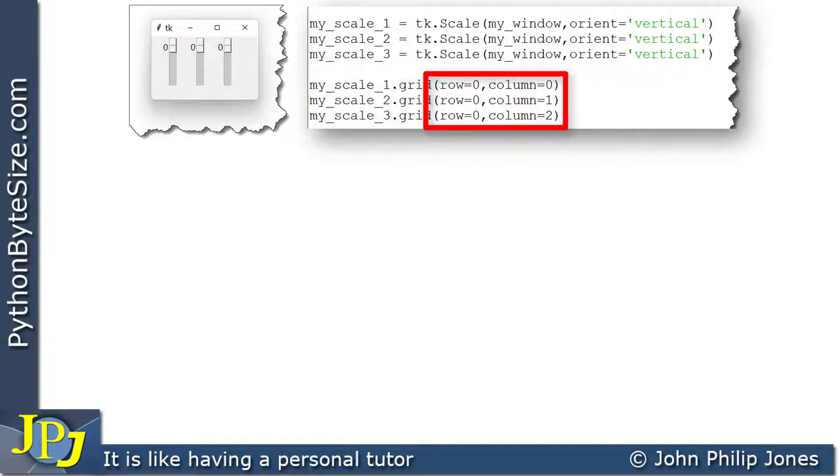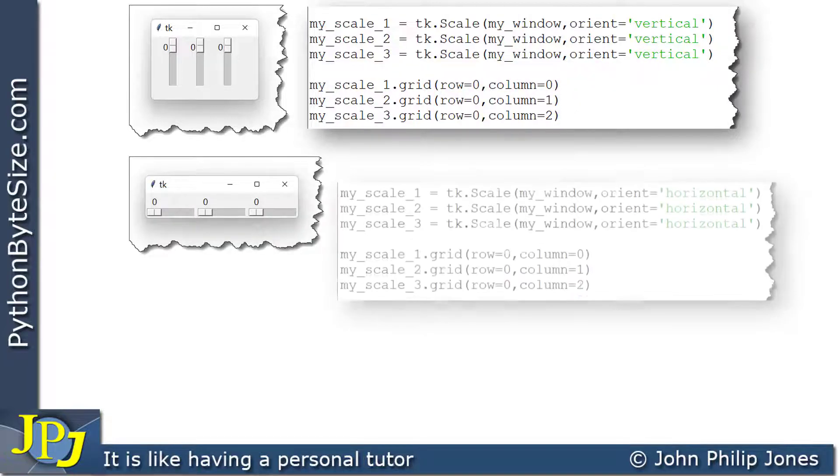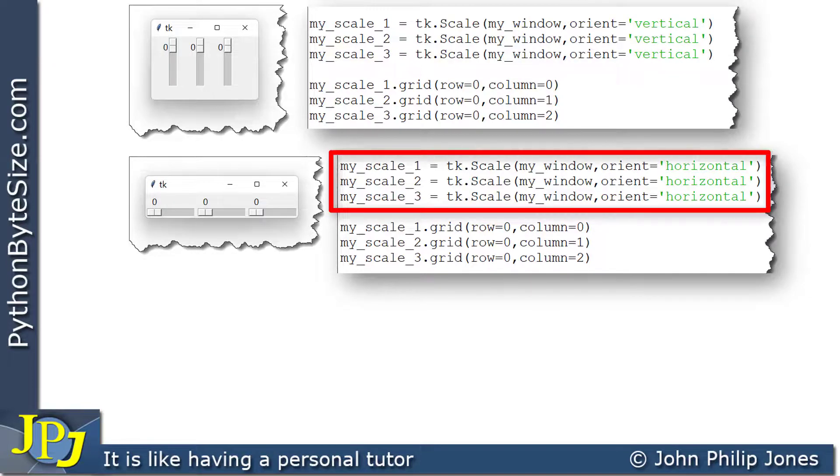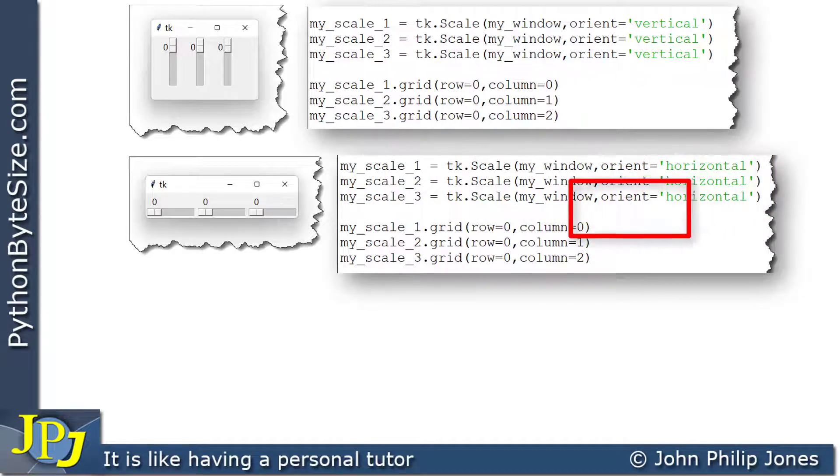For this graphical user interface, the snippet of code is shown here, where we can see that when we created the widgets, we made them all horizontal. And these were the values of the row and column that positioned the widgets on the window.